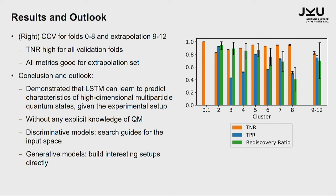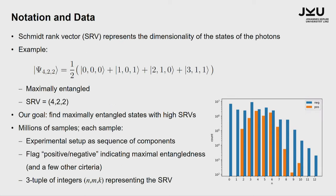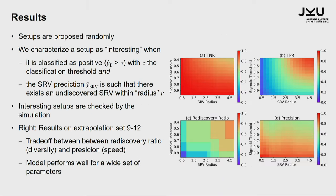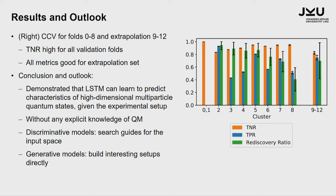We demonstrated that the LSTM can learn to predict the characteristics of such high-dimensional quantum states without any explicit knowledge about quantum physics. The training set was calculated by Melvin over many months — just randomly selected sequences with computed target values. Training set generation requires a huge amount of computational power, but once you have it you can have very fast inference. You can also build a generative model out of the discriminative model, where you give a certain number of elements and the LSTM predicts the next best element — like, should you put a hologram or a wave plate next.